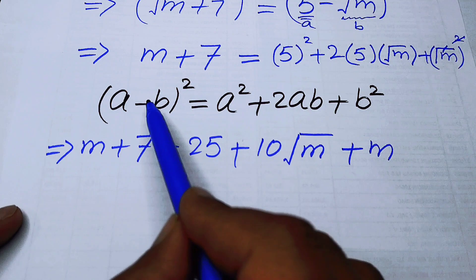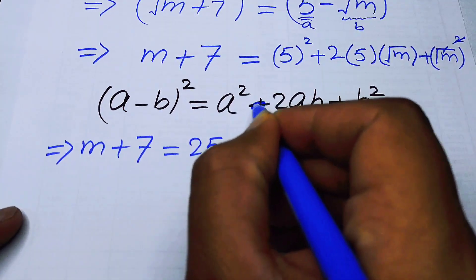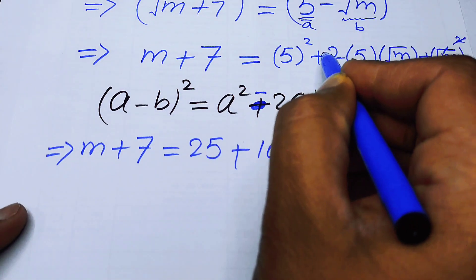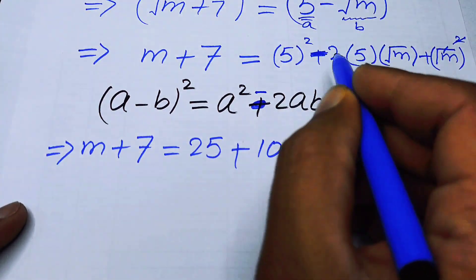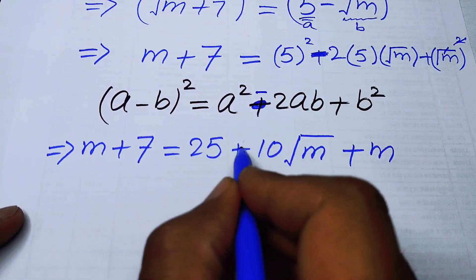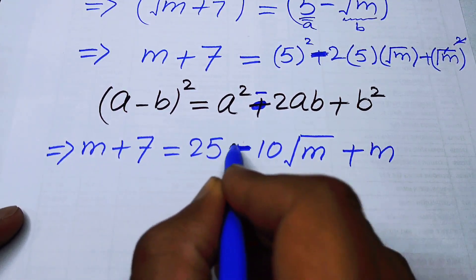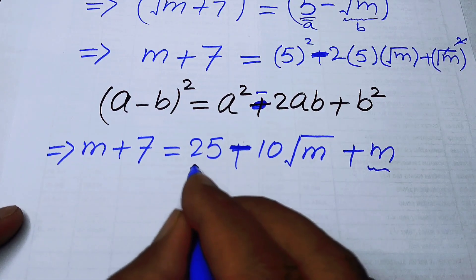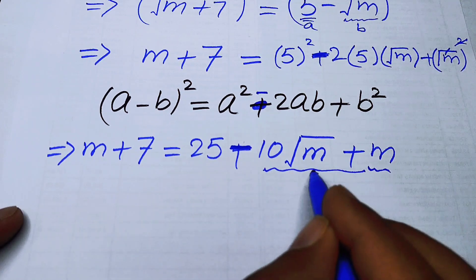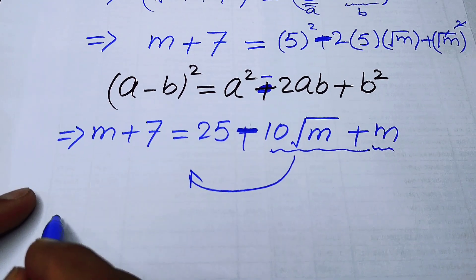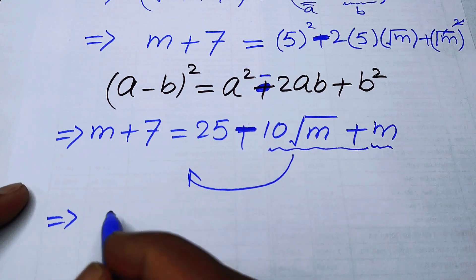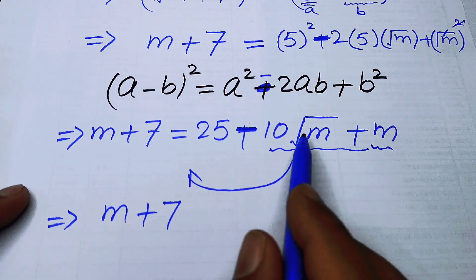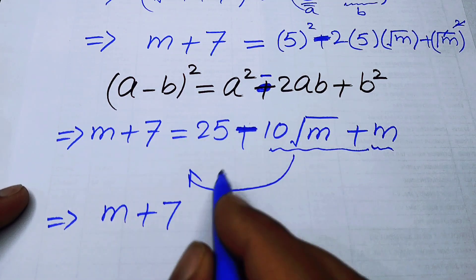Since (a - b)² gives a² - 2ab + b², the sign on the middle term is negative, so we have 25 - 10√m + m. We now move terms around: bringing the -10√m to the left hand side gives +10√m, and we collect the m and constant terms.